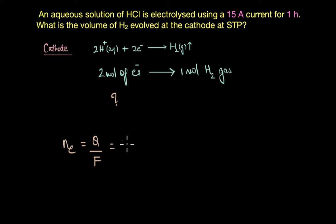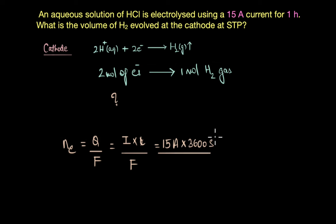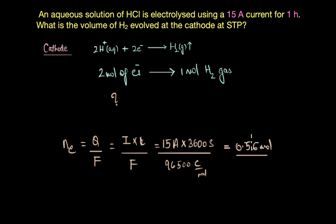The current passed is 15 amperes for one hour, which is 3600 seconds. Dividing by Faraday's constant (96500 C/mol), we get 0.56 moles of electrons. Since two moles of electrons produce one mole of hydrogen gas, 0.56 moles of electrons would produce 0.28 moles of hydrogen gas.